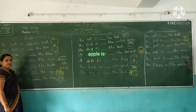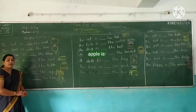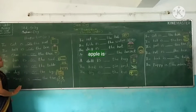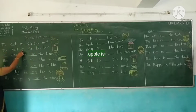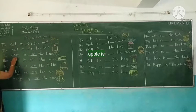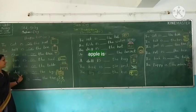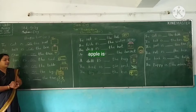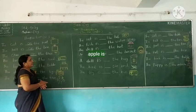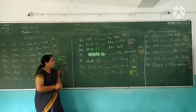Understood? Children, these are all related to the 'on' preposition. Copy down in your notebook and revise: the cat is on the mat, the ball is on the box, the crow is on the tree, the bus is on the road, the book is on the table, the dog is on the log, and the mango is on the tree. Now the next preposition is 'in.'